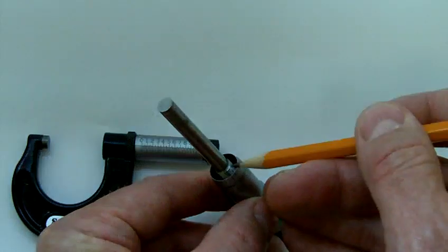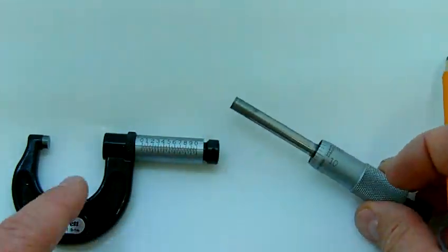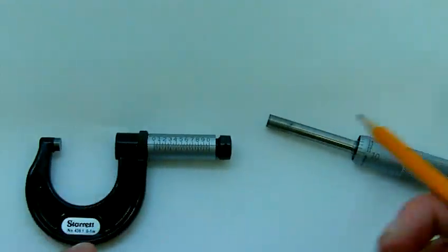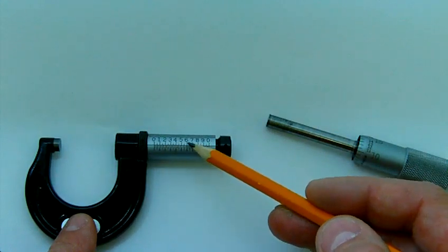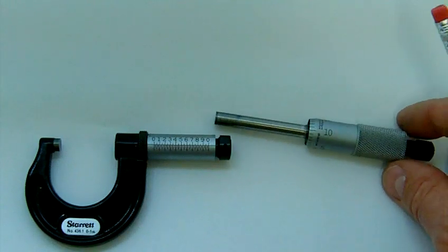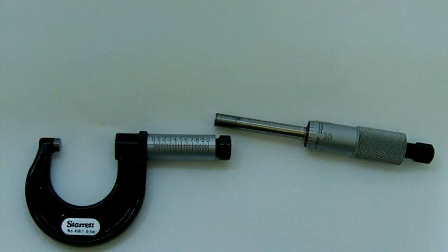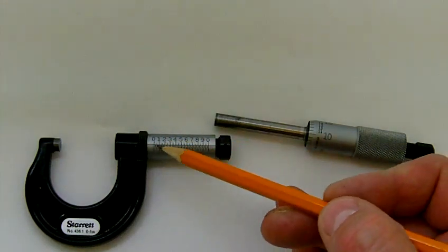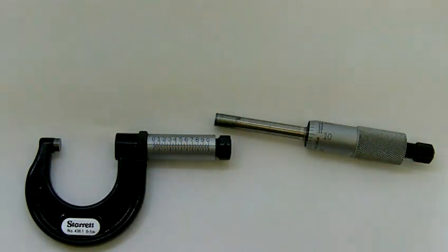40 threads to the inch. So if I give the thimble one complete revolution, it would move the micrometer one fortieth of an inch. If you take your calculator and put in one inch divided by 40 and hit enter, the number should be 0.025 or what we would call 25 thou. So each graduation on the main scale will equal 25 thou.